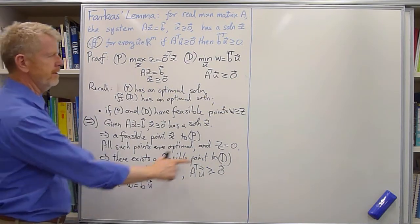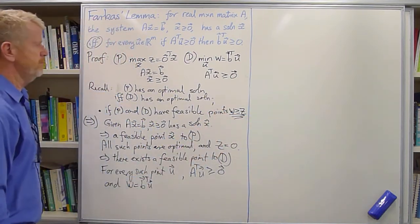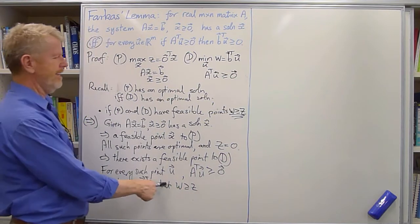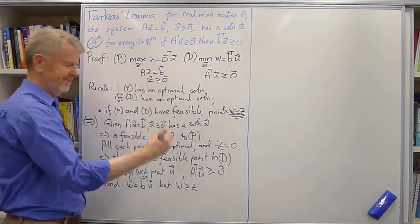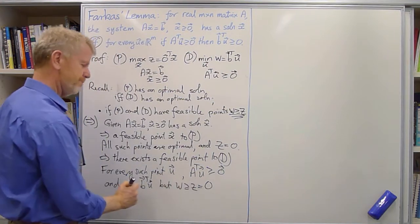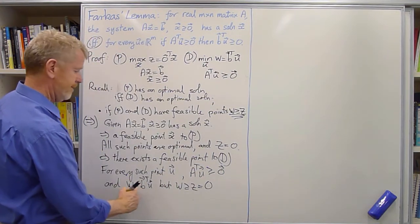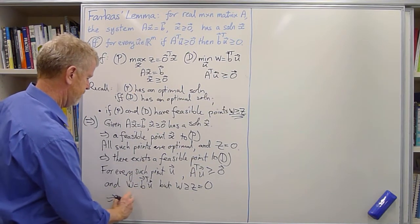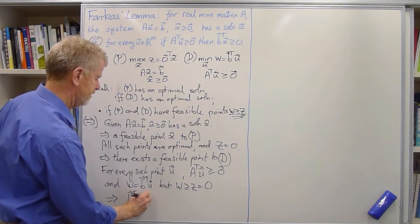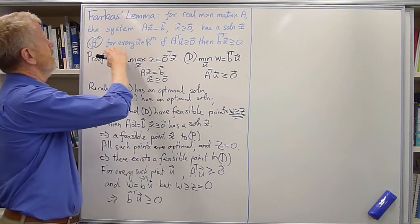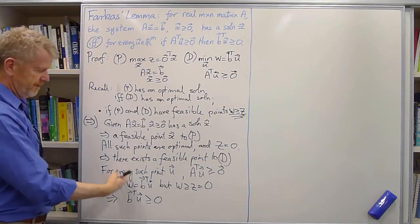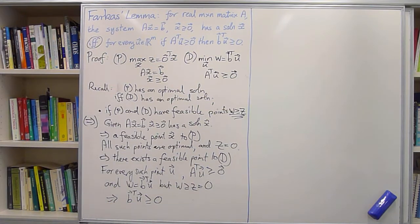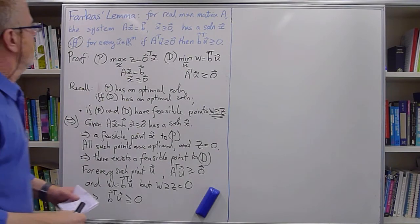We know that A transpose U is bigger than or equal to 0 by the constraints. And we know that W is B transpose U by the definition of what we're minimizing in the dual. But now comes the sneaky bit. We also know that W is bigger than or equal to Z. And we know that W is bigger than or equal to 0. And W is B transpose U. So that necessarily implies that B transpose U is bigger than or equal to 0. And hence, this second condition follows. We've found that all points satisfying this have to also satisfy that.